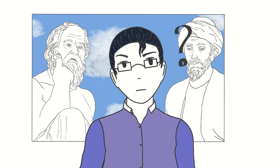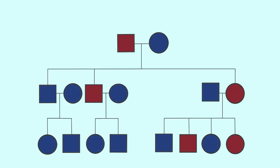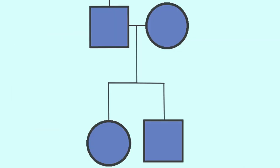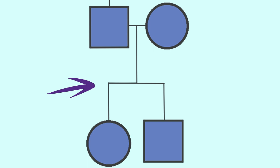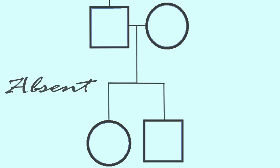What are pedigree charts? A pedigree chart is a diagram that shows the genetic relationships between family members over multiple generations. It uses standardized symbols and lines to depict the presence or absence of a specific trait, genetic disorder, or condition.